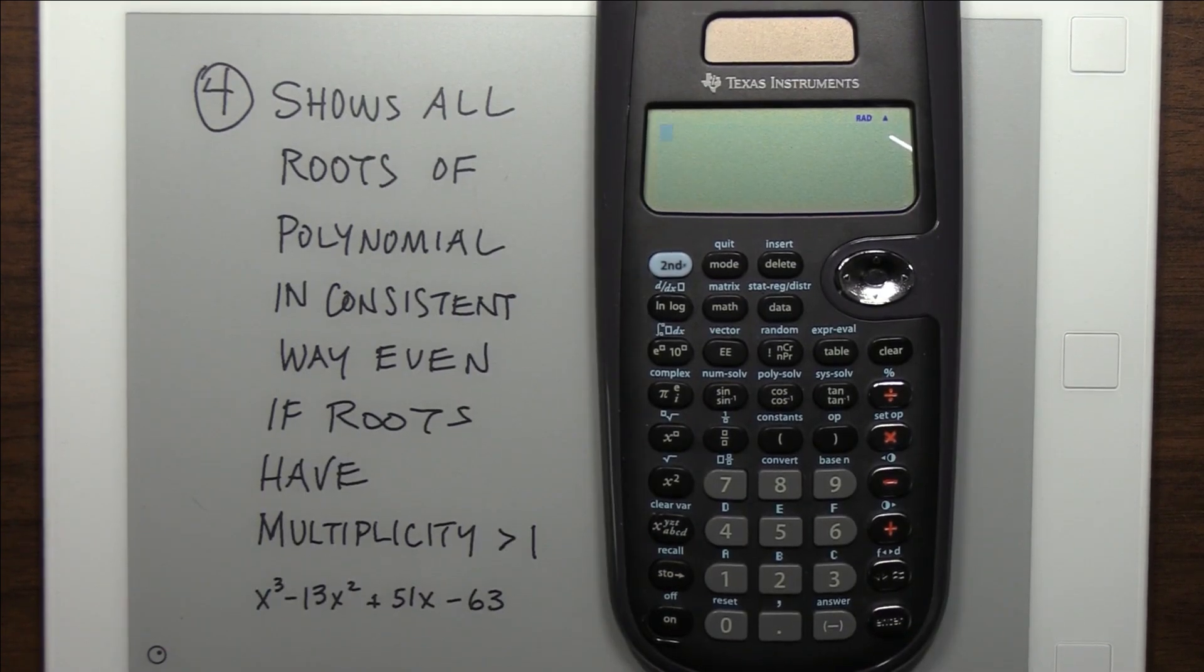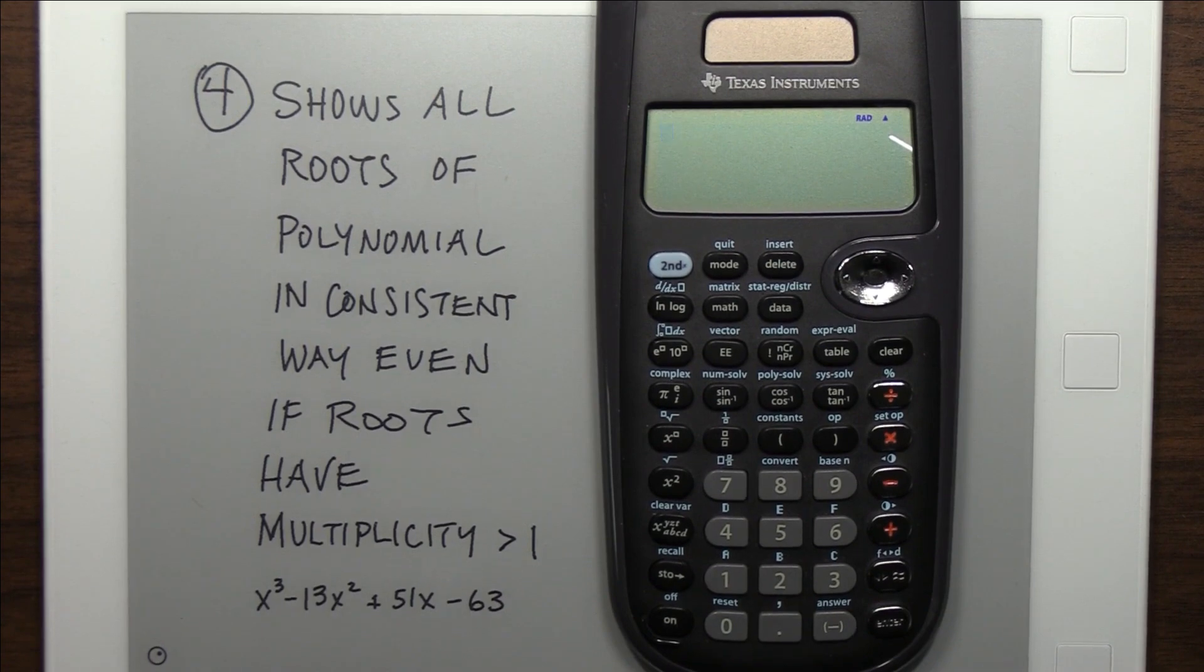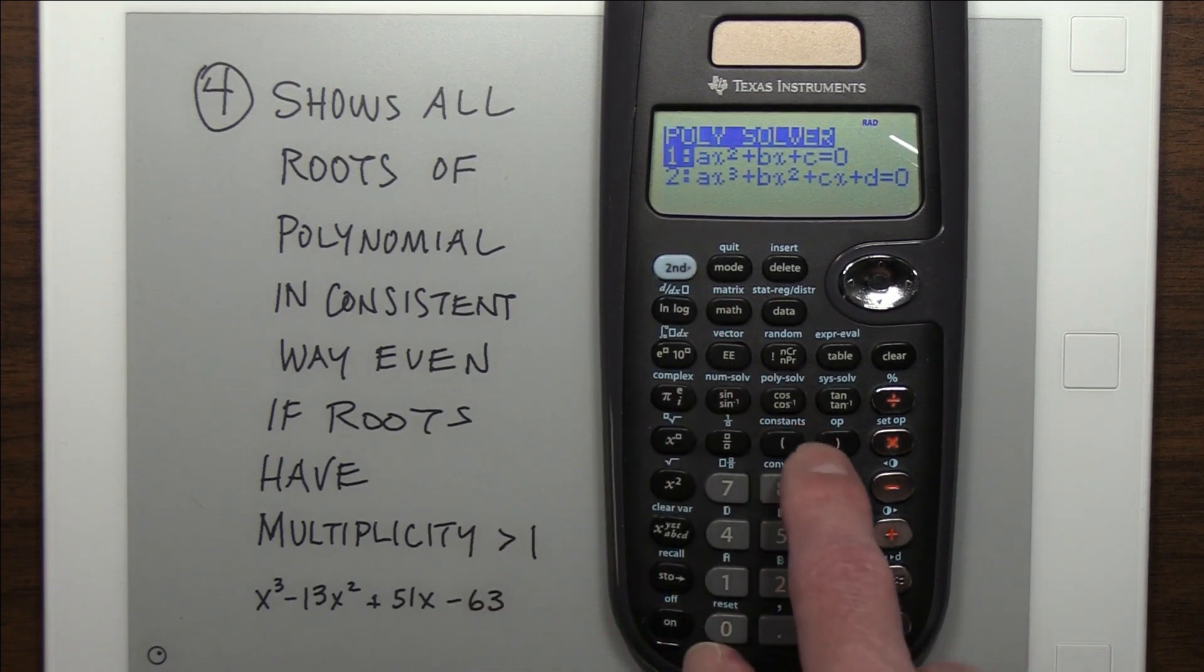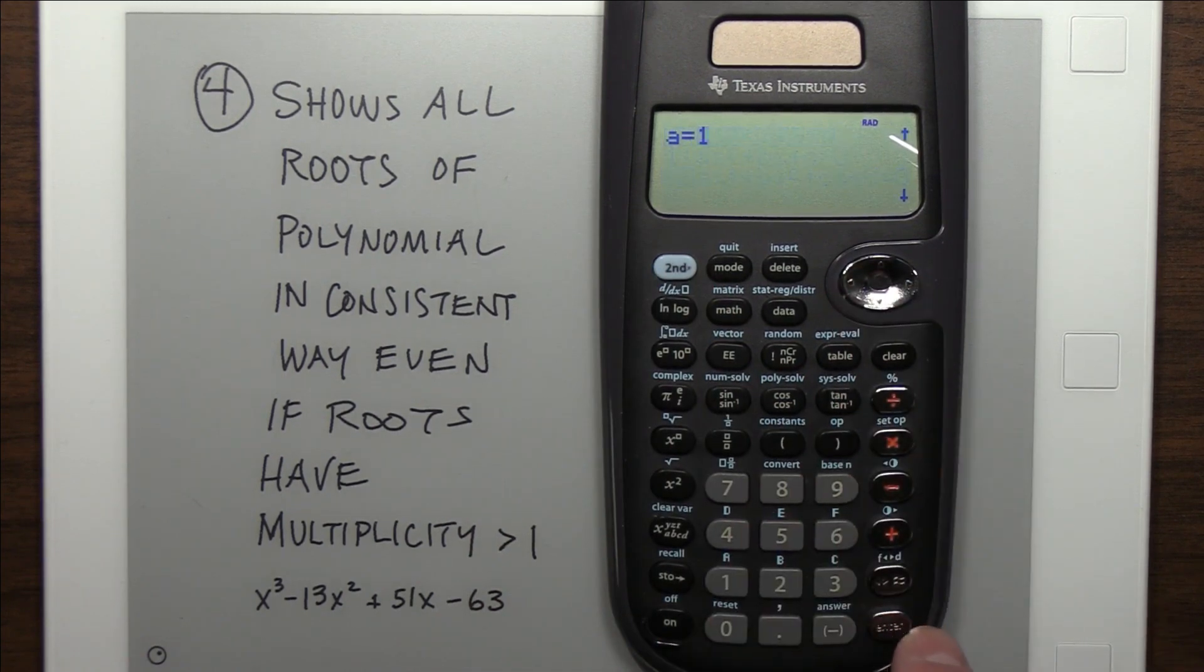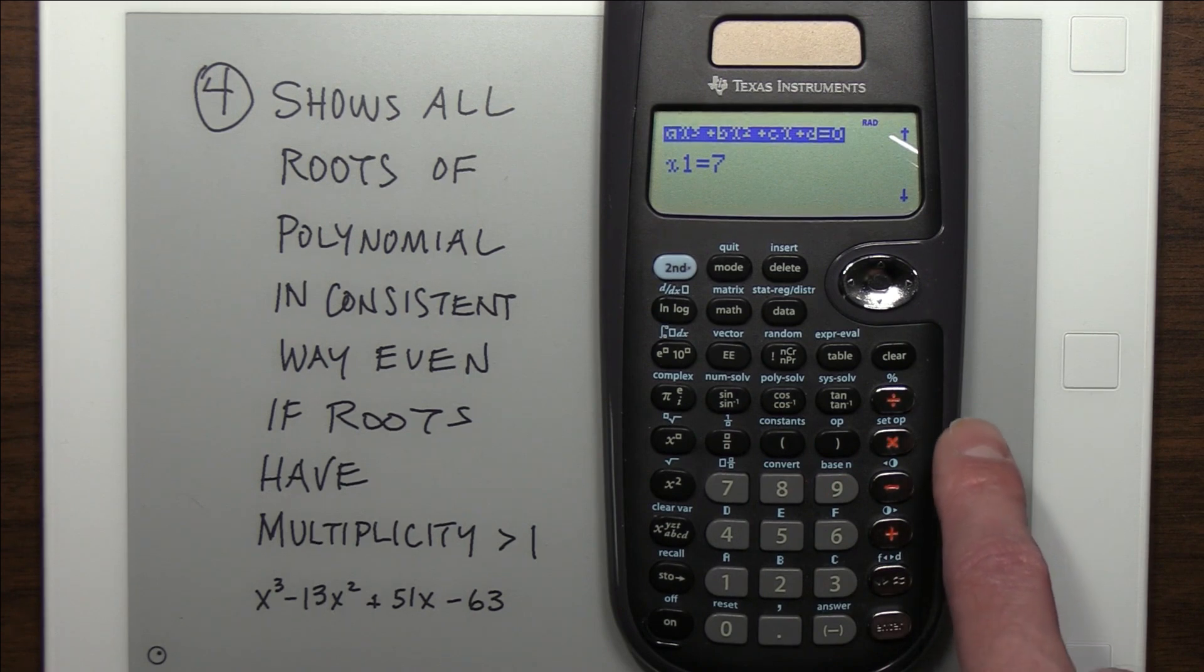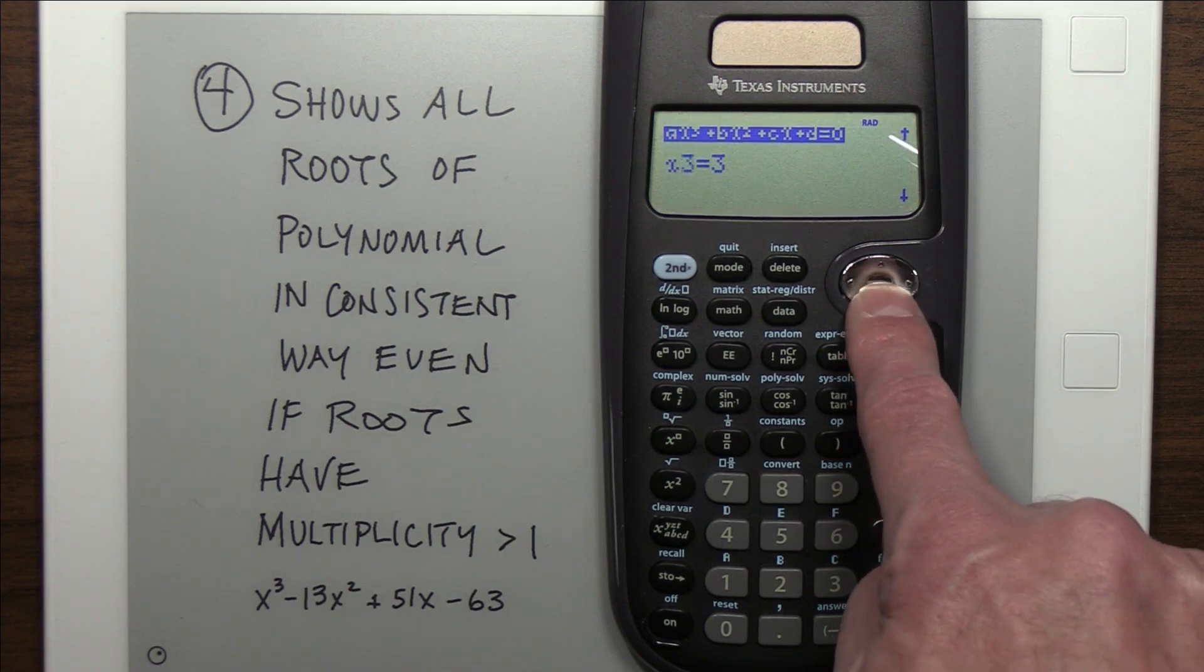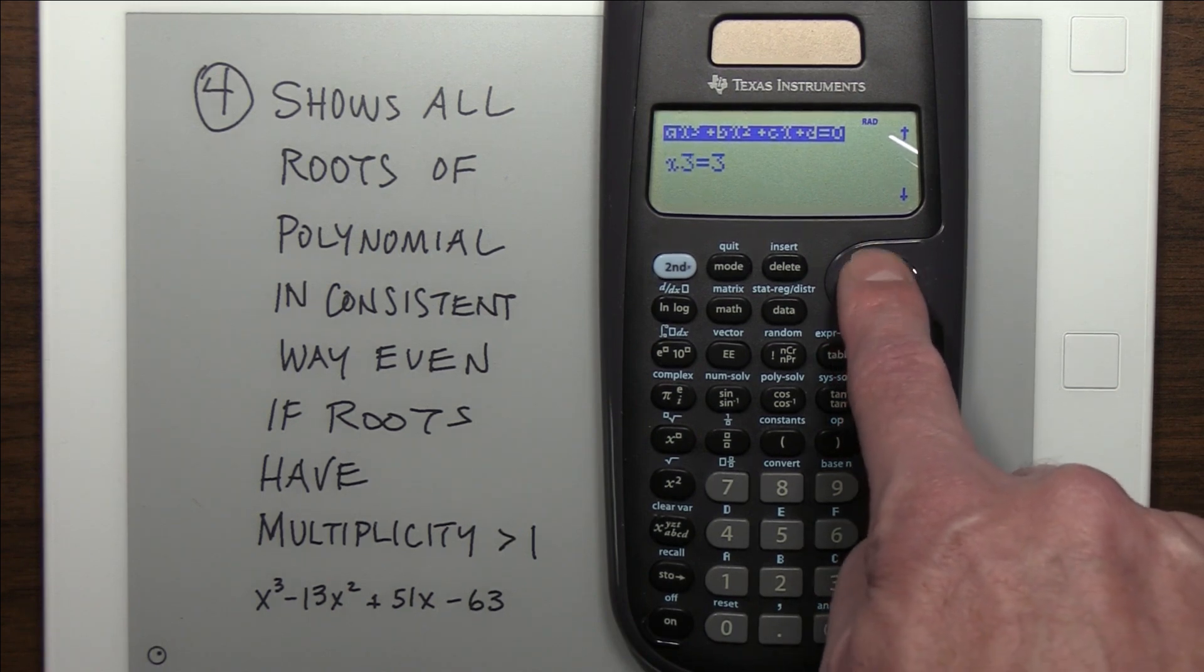Okay, the last thing I wanted to look at is on the TI-36. It will show all the roots of a polynomial in a consistent way, even if those roots have a multiplicity greater than 1. So we go into the polynomial solver, and we're doing a cubic here. A 1, a negative 13, a 51, and a negative 63. Obviously, I had done that previously. Solve it, and we see that we have x1 of 7, x2 of 3, and x3 of 3. So our double root is 3.